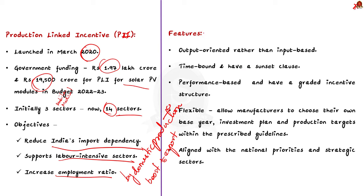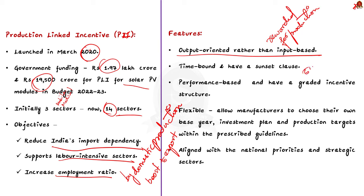The first feature of the PLI scheme is that it is output-oriented rather than input-oriented — beneficiaries are rewarded for increasing production and sales rather than for investing in capital or infrastructure. Second, it is time-bound with a sunset clause, valid for 5 to 6 years depending on the sector. Third, it is performance-based with a graded incentive structure — the incentive rate varies according to whether the manufacturer is domestic or foreign, the level of value addition, the type of product, and the year of operation.